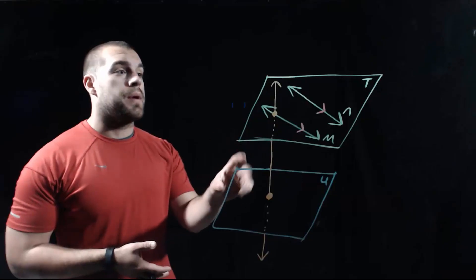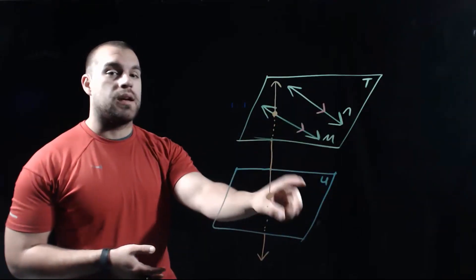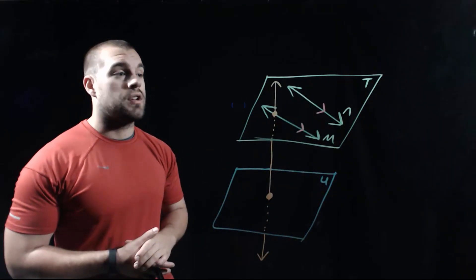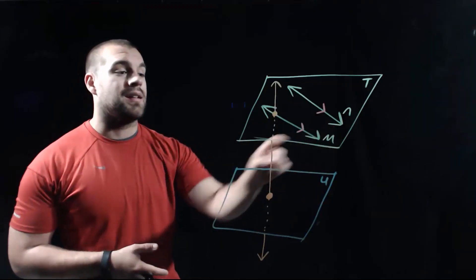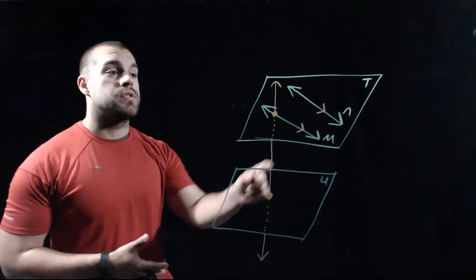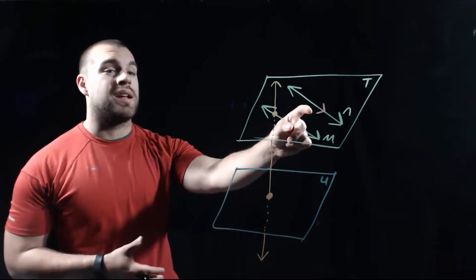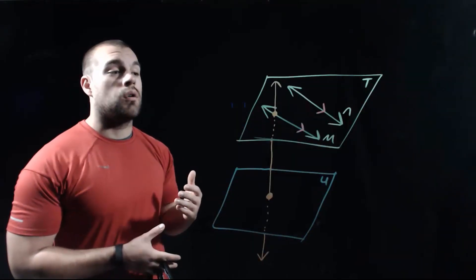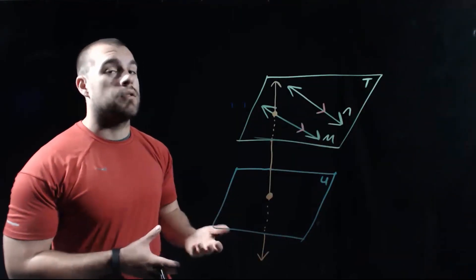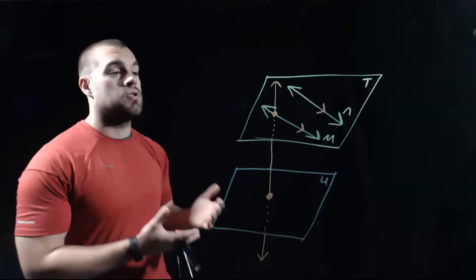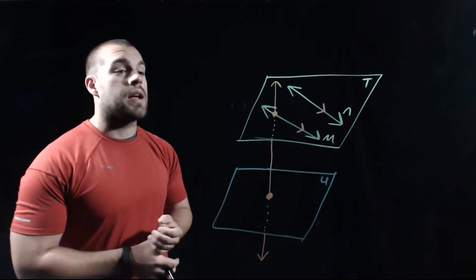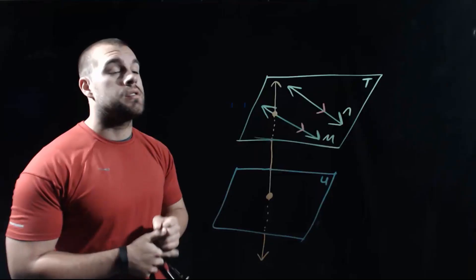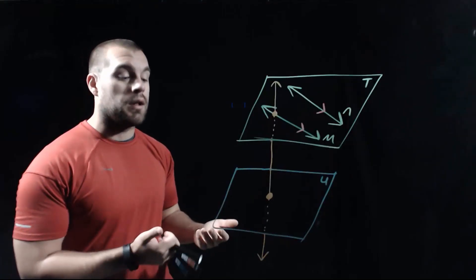In my picture, I've got plane T up at the top and plane U down at the bottom. On plane T, there's a couple of lines — we've got line N and line M. Those have some red arrows on them, and what that means is that those two lines are going to be parallel to each other, which means they don't intersect. If we've got lines that are coplanar on the same plane and don't intersect, that's what makes them parallel.